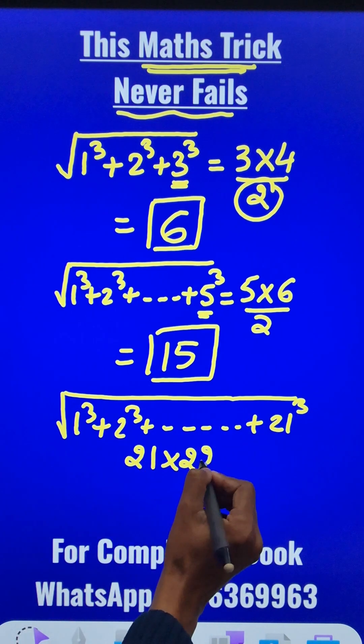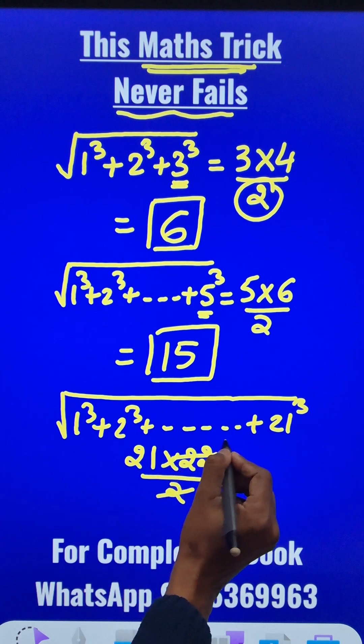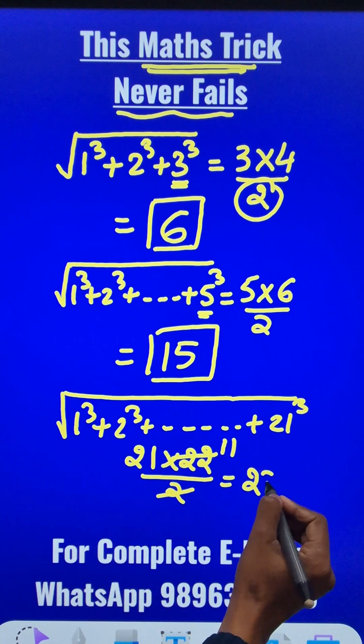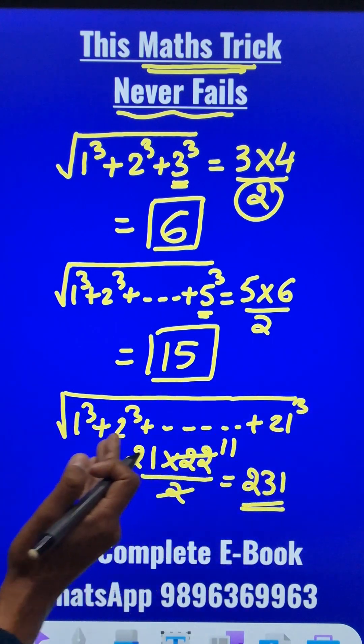21 × 22, divide by 2. The 2 cancels to give 11. 21 × 11 = 231, which is the square root of the sum of these cubes.